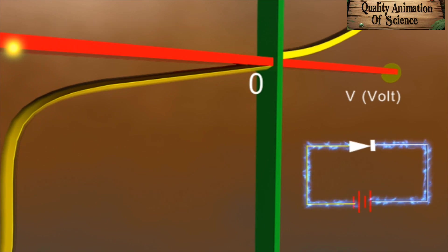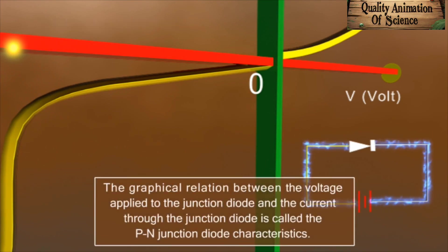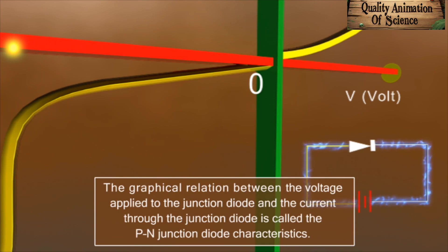The graphical relation between the voltage applied to the junction diode and the current through the junction diode is called the P-N junction diode characteristics.